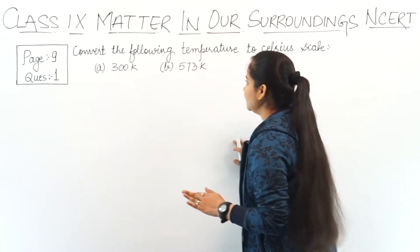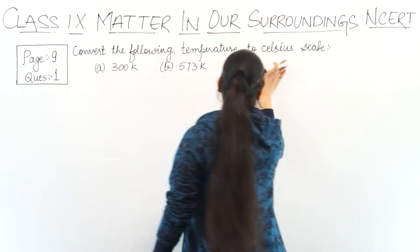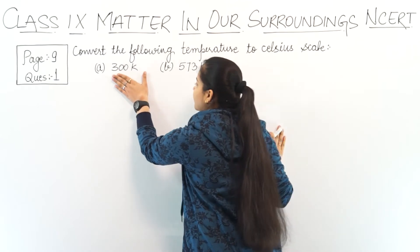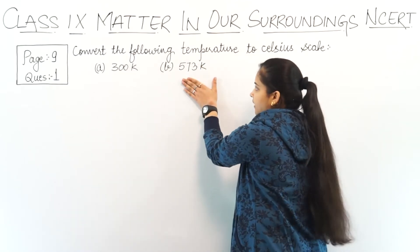The question is: convert the following temperatures to Celsius scale. We have 300 Kelvin and 573 Kelvin.